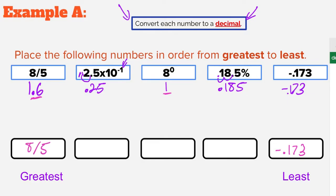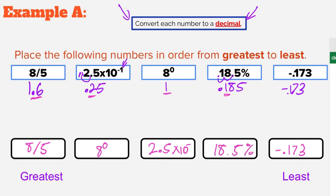Notice that we write the numbers back in their original form — the decimal was just a tool we used to convert. So we put 8 fifths as greatest. Since 1 was our next biggest number, that's 8 to the 0 power. Then comparing 0.25 and 0.185, the 2 is bigger than the 1, so 2.5 times 10 to the negative first comes next, leaving 18.5% as our last number. That brings us to the end of Example A.